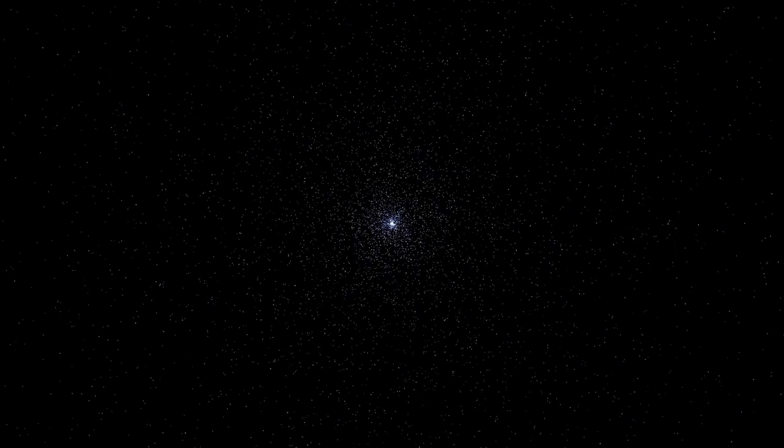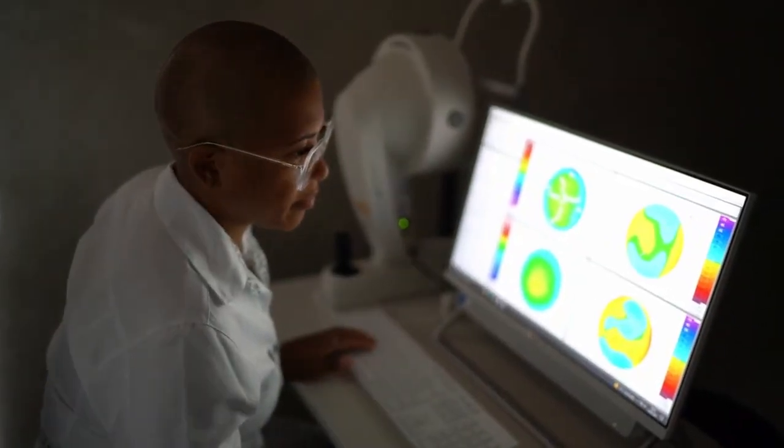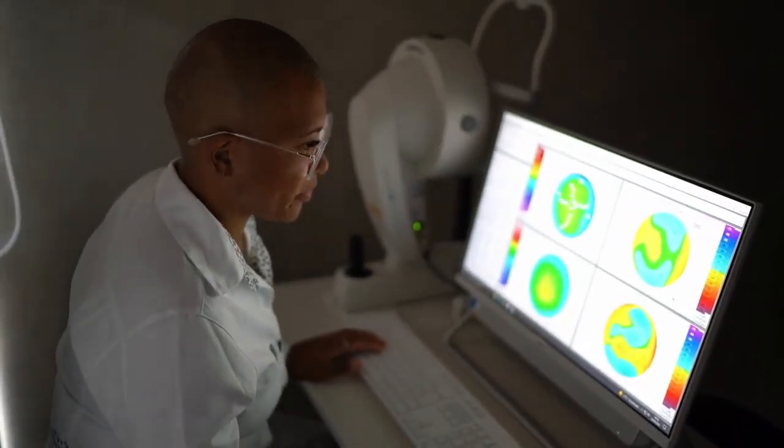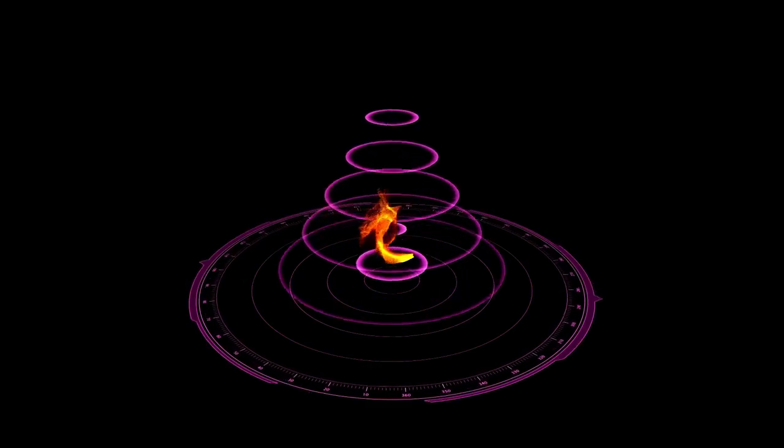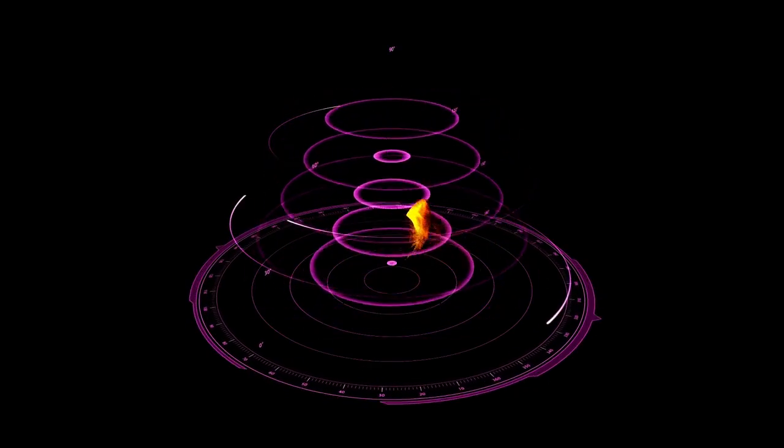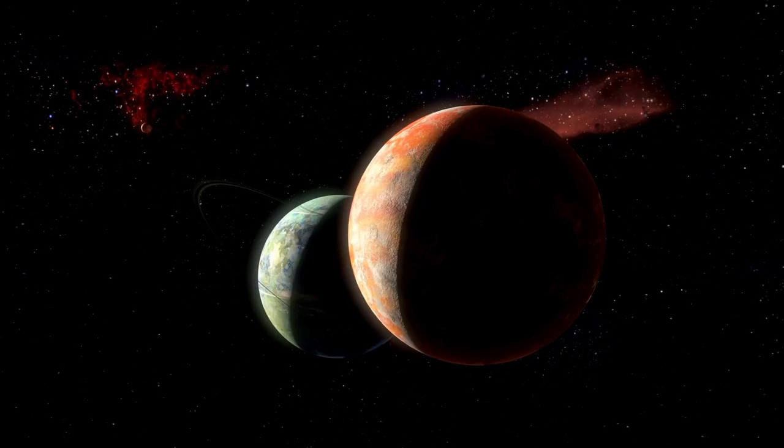This is the oldest light we can see, the cosmic microwave background. But right after that first flash of light, the universe went dark. This is what scientists call the cosmic dark ages. There were no stars, no galaxies, just vast silent clouds of hydrogen gas. This wasn't an empty universe. It was one full of a thick light-absorbing fog.